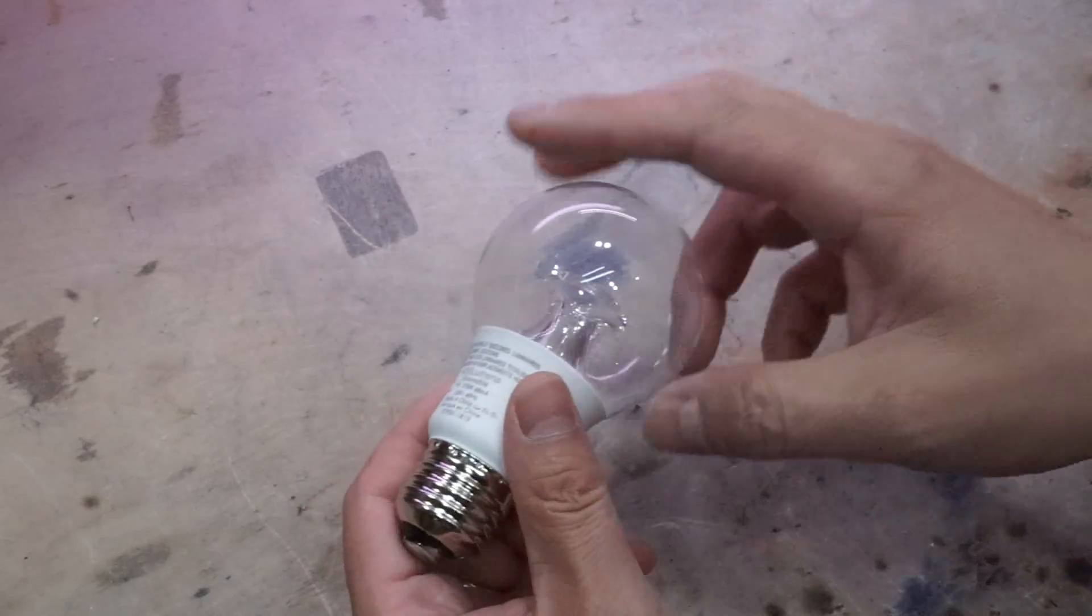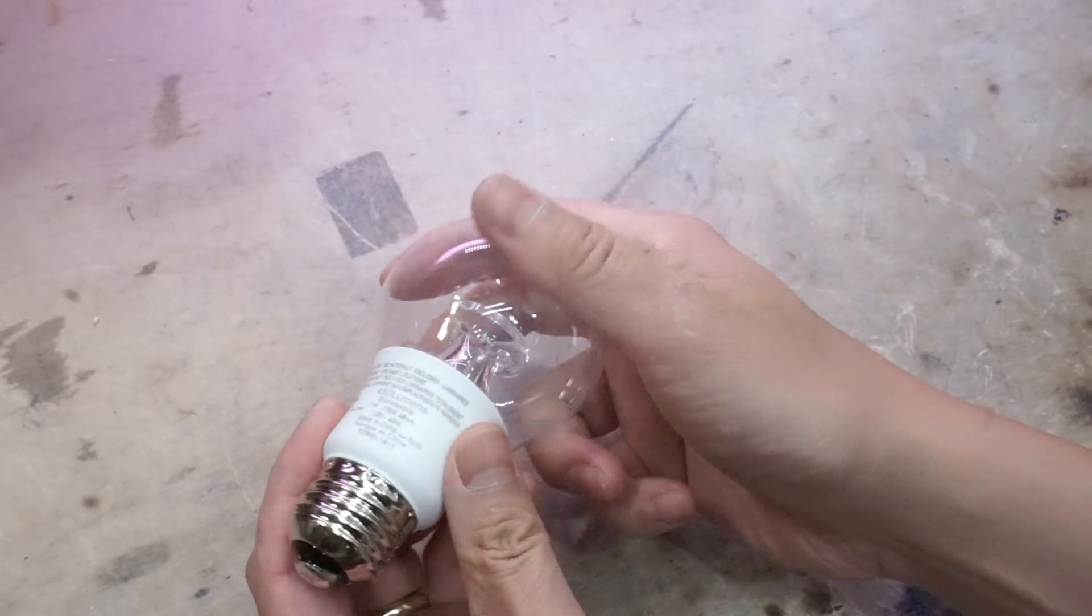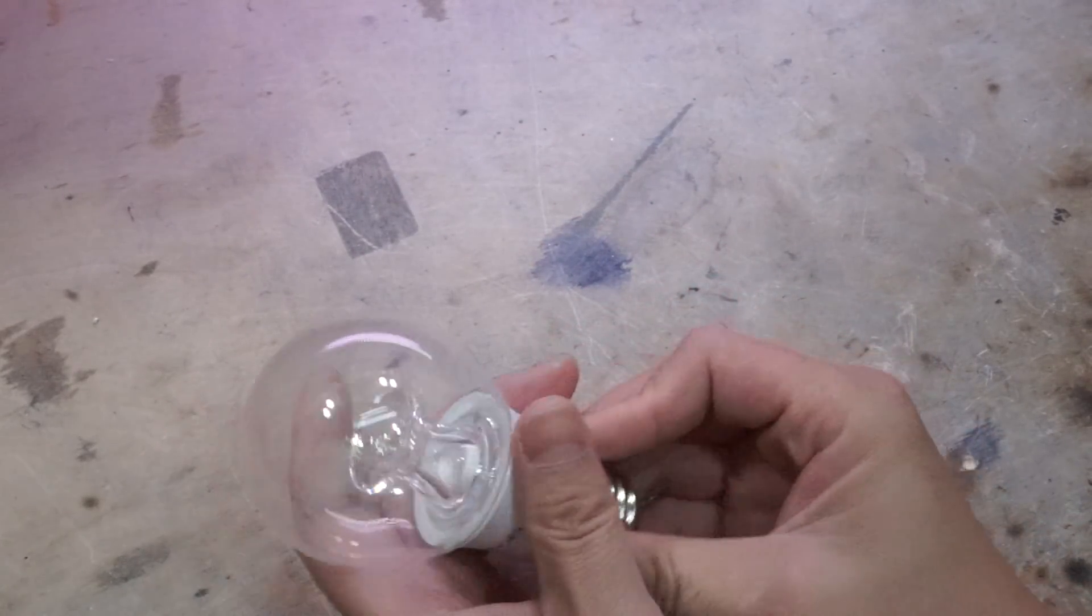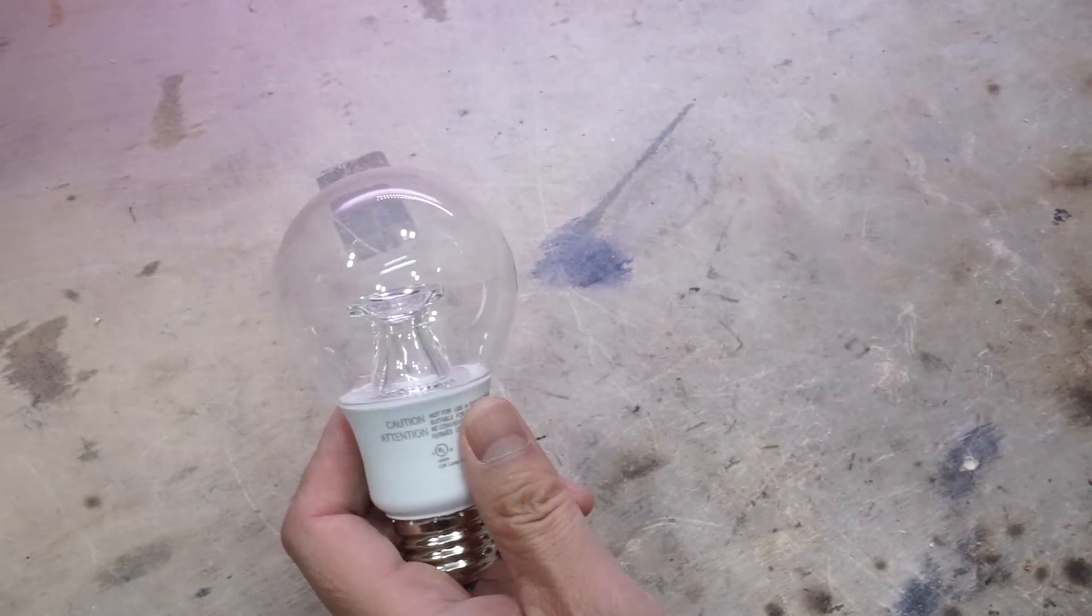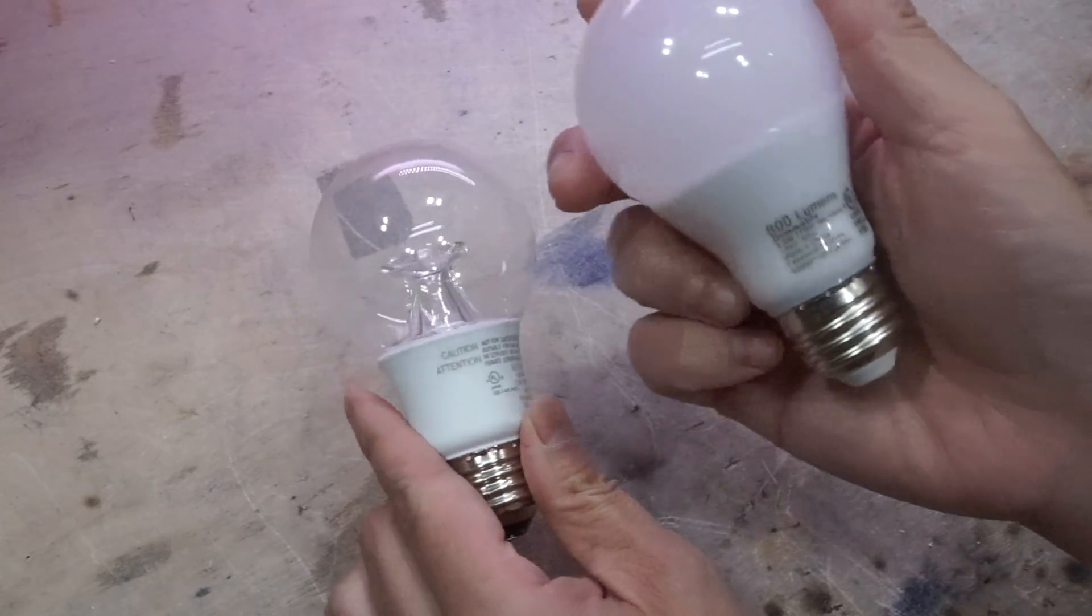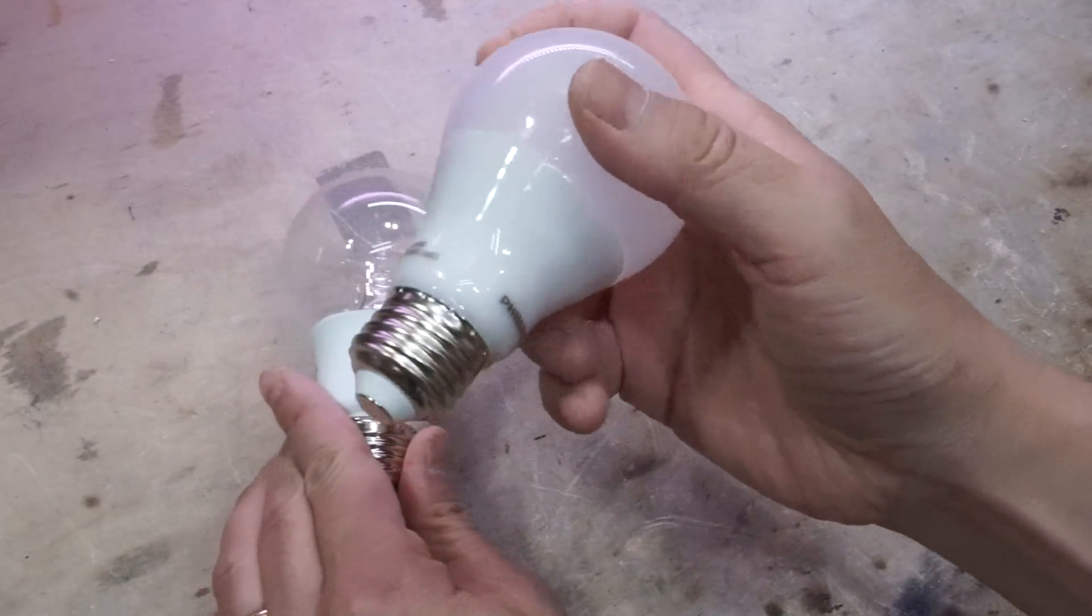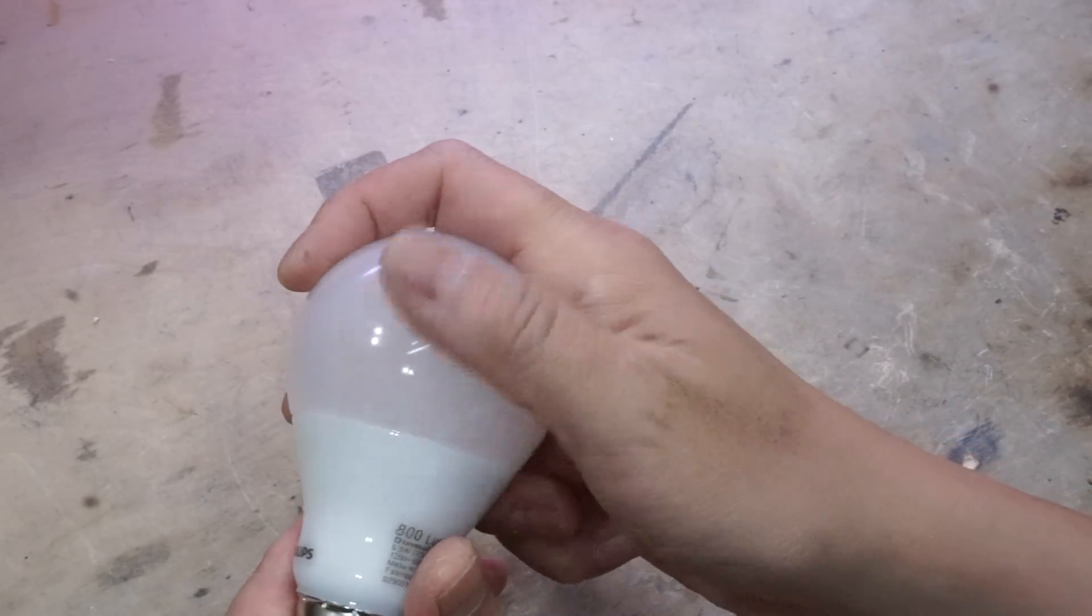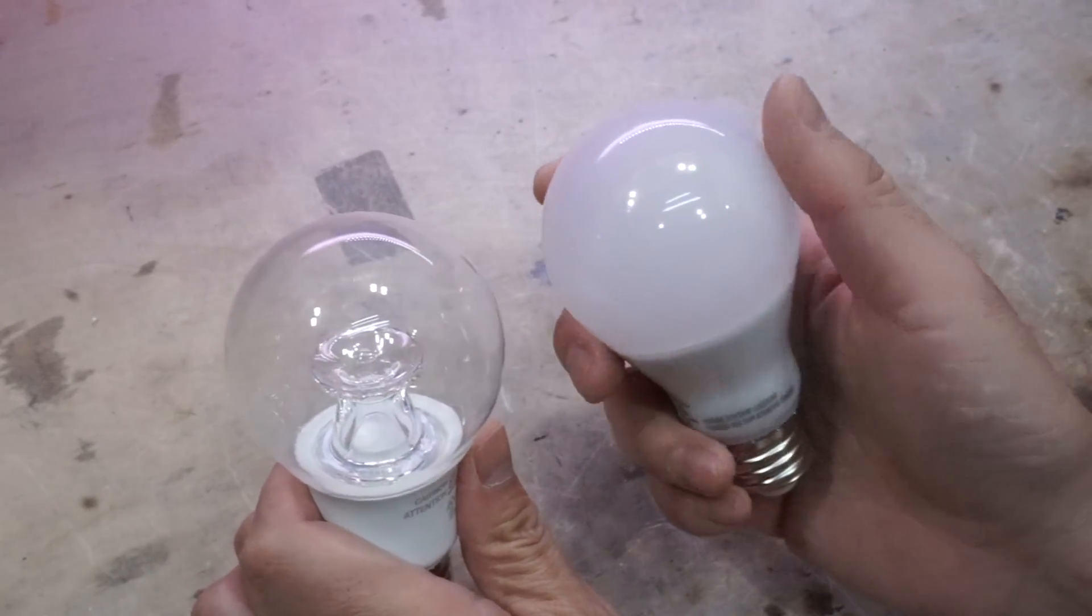And to open this up, I'm going to use my Dremel. By the way, I think this might actually be glass, which is very interesting because these LED bulbs do not really need to pull vacuum inside. So most of the time it's just plastic. And I do have a 60-watt equivalent, which is this one. So it's also Philips. And you can see the construction is extremely similar. But this one, the top actually feels like it's plastic. So this one is actually glass, which is very interesting.